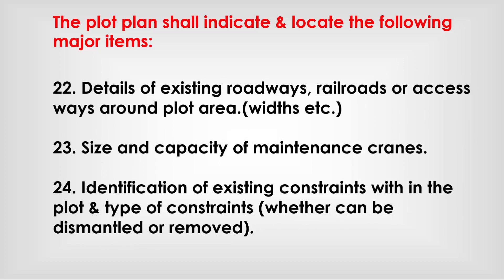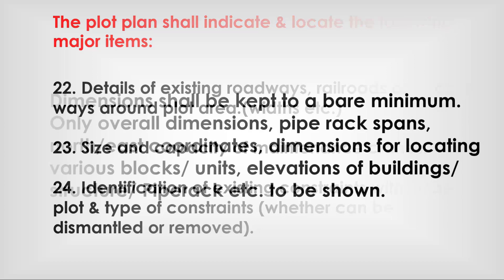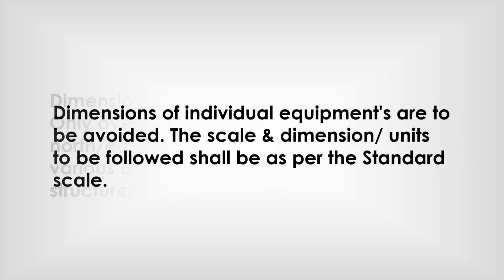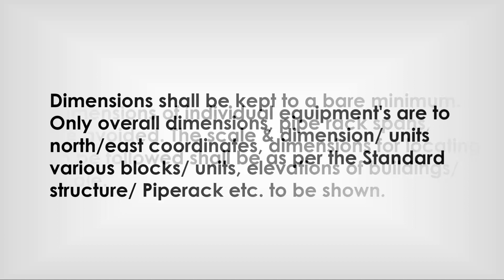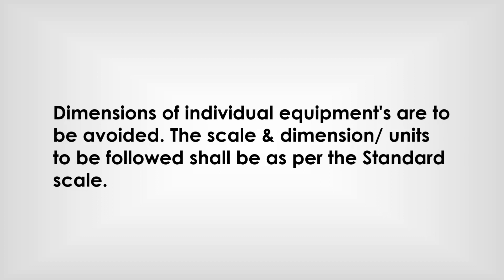Details of existing roadways, railroads, or accessways around the plat area, size and capacity of maintenance screens, and deviations of existing constraints within the plat — including whether they can be dismantled or removed — are documented. Dimensions shall be kept to a bare minimum: only overall dimensions, pipe rack spans, north-east coordinates, dimensions for locating various blocks and units, and elevations of buildings, structures, and pipe racks. Dimensions of individual equipment are to be avoided, and the scale of dimensions should follow the standard scale.